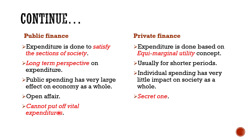Eleventh, the state cannot postpone vital expenditures, whereas in private finance individuals can postpone their expenditure. An individual can plan to postpone private expenditure, but the state cannot afford to put off vital expenditure like defense or famine relief. The compulsory character is an important feature of public finance.